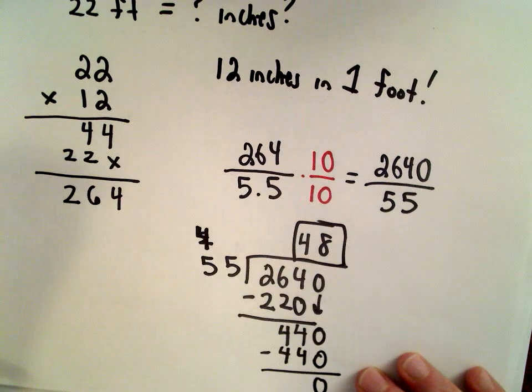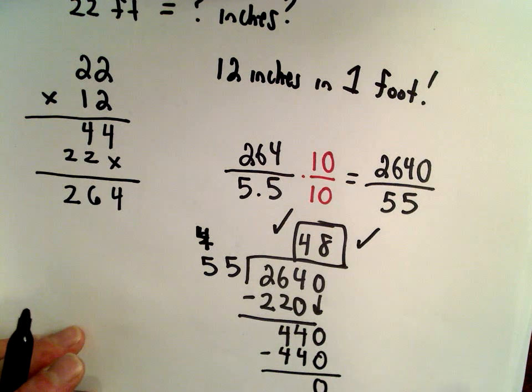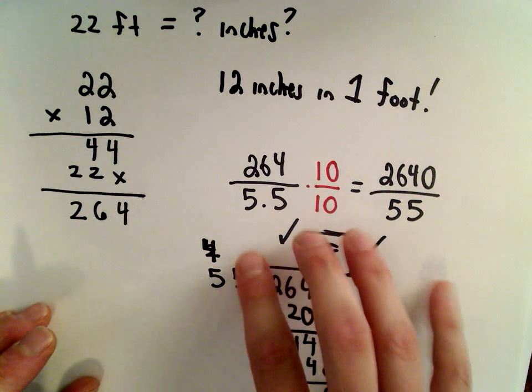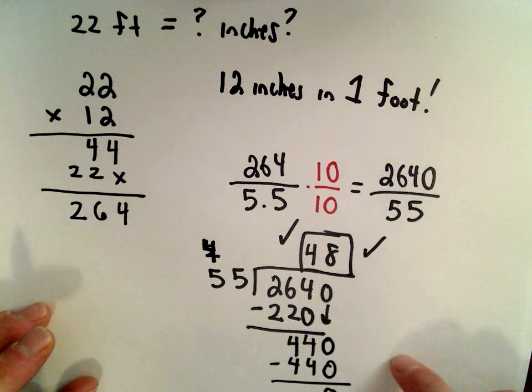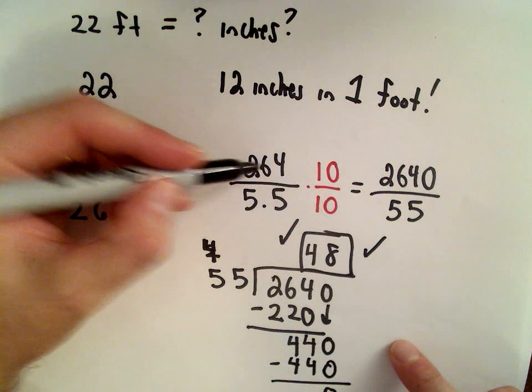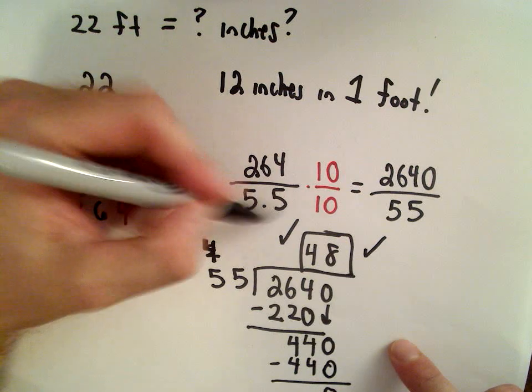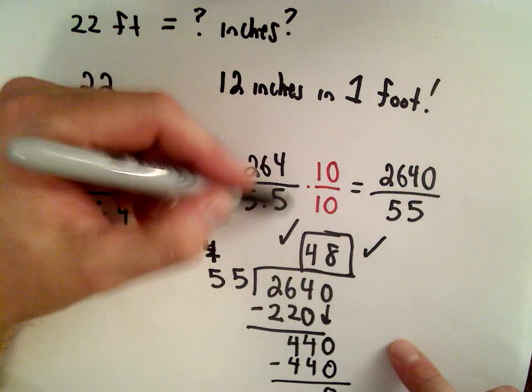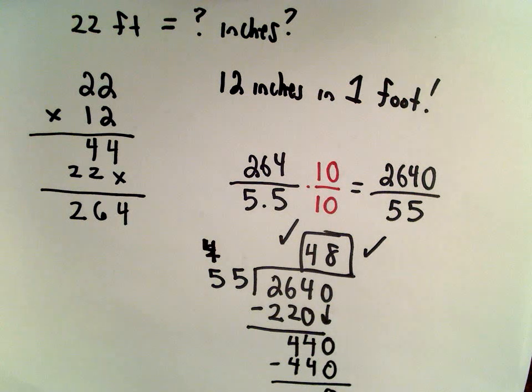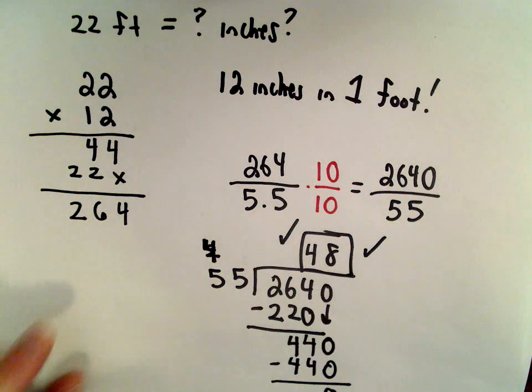So 48 is going to be the correct solution. This might be a daunting arithmetic problem for some of you, so I would certainly encourage you to practice doing some long division with some numbers where the denominator has a decimal in it. It can be a little obnoxious.